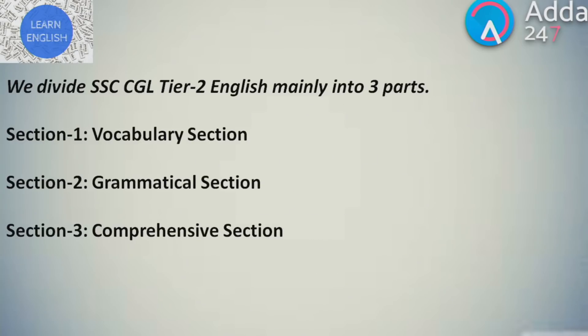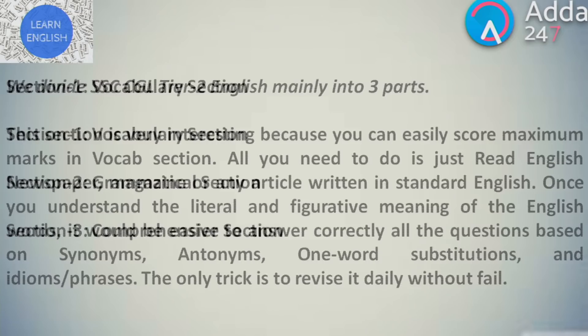We divide SSC CGL Tier 2 English mainly into three parts: Section 1, Vocabulary; Section 2, Grammatical Section; and Section 3, Comprehension Section.